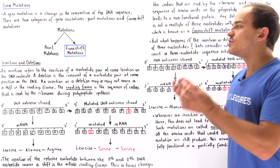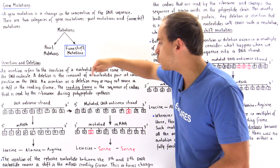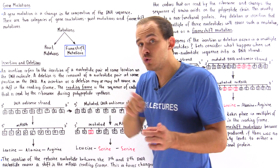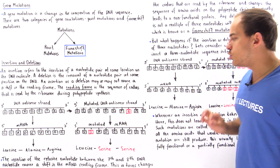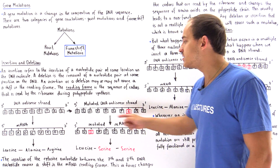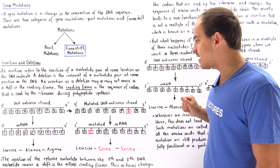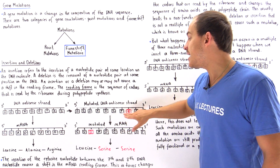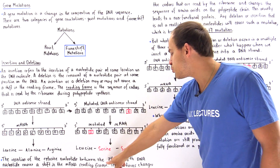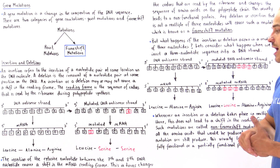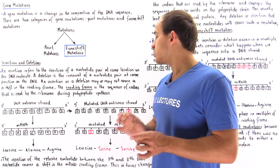Now let's suppose that as a result of some outside factor, we have an insertion mutation taking place. Between the 7th and the 8th nucleotide on the DNA antisense strand, we insert a cytosine nucleotide. So now our DNA strand consists of 10 nucleotides instead of 9. The mutated DNA antisense strand now reads GCGAGCTCAG, where cytosine has been inserted between the 7th and 8th DNA nucleotide.